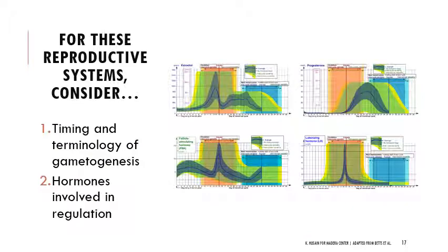When thinking about male and female reproductive systems, focus primarily on the timing and terminology behind gametogenesis, as well as the hormones involved in regulation. I also want to draw your attention to these plots because you'll be looking at them in the final lab on the reproductive system. Really notice the LH surge right before ovulation — the baseline level of LH is very low, then it peaks sharply. Observe that even though there are peaks around the same point for FSH and for estradiol, the baseline levels are very different between those hormones.